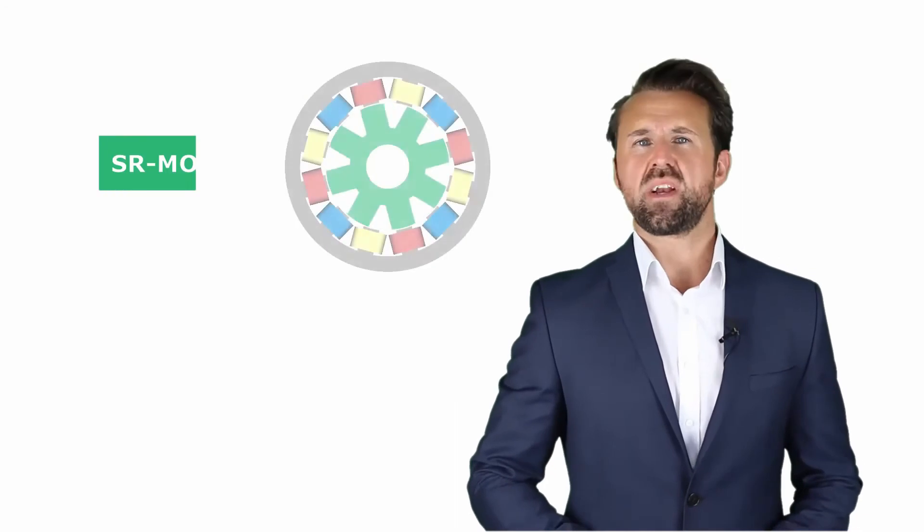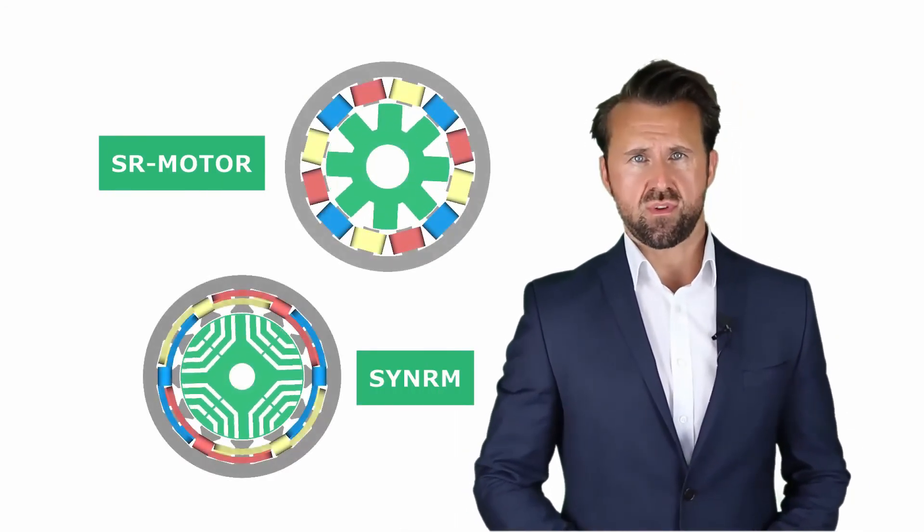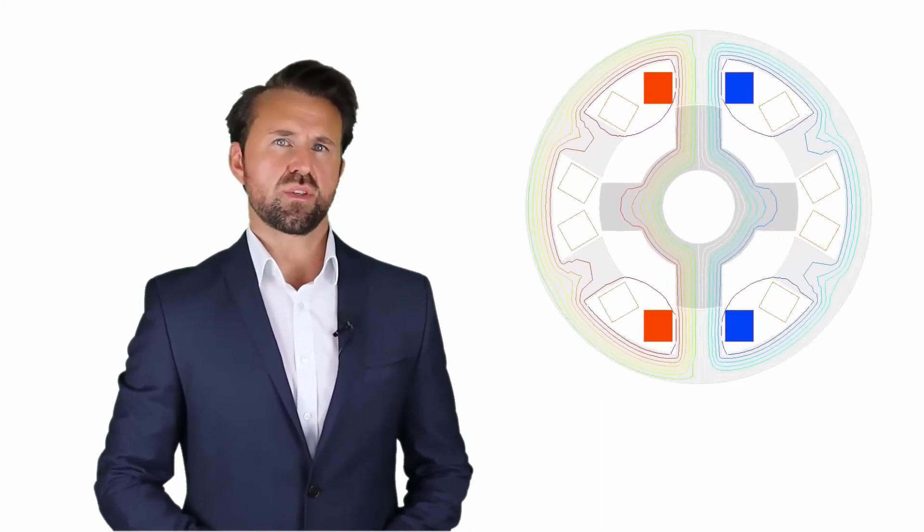The third type of Synchronous Motors are Reluctance Motors, which have no magnets or coils in the rotor. They can be divided into Switched Reluctance Motors and Synchronous Reluctance Motors. The rotor has a magnetic resistance depending on its position, which is called Reluctance. Since the magnetic flux always takes the path of lowest resistance, the rotor aligns itself in the direction of the lowest magnetic resistance.